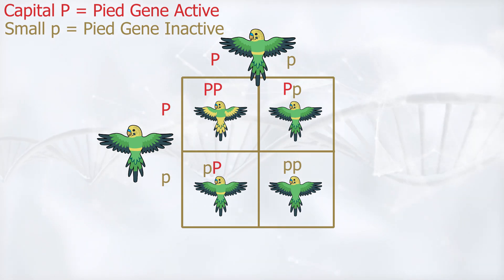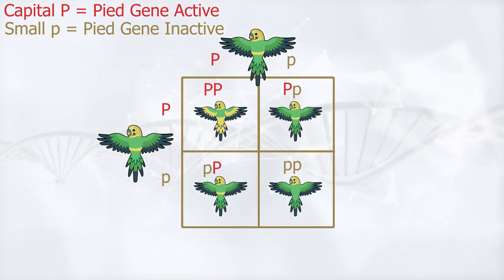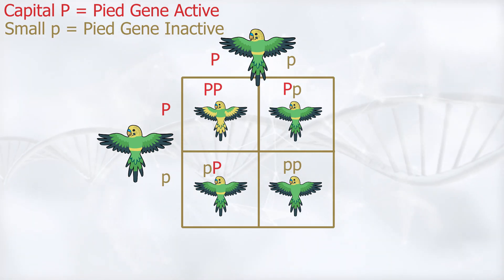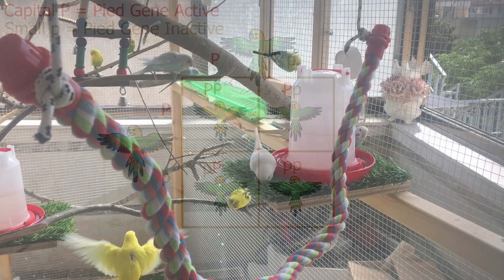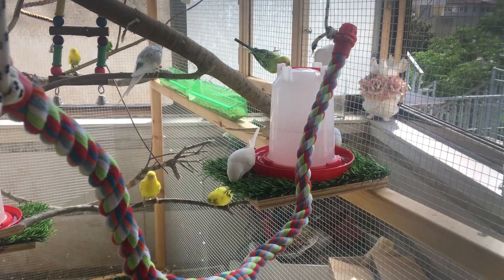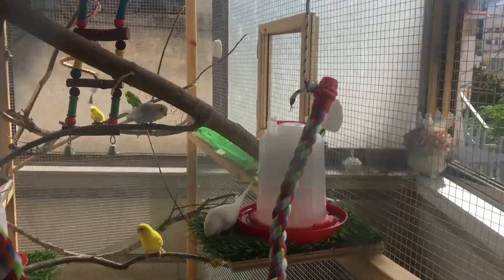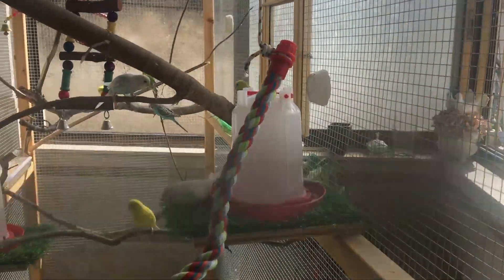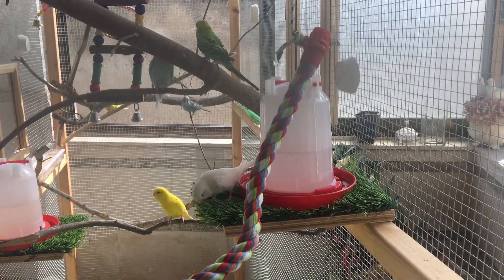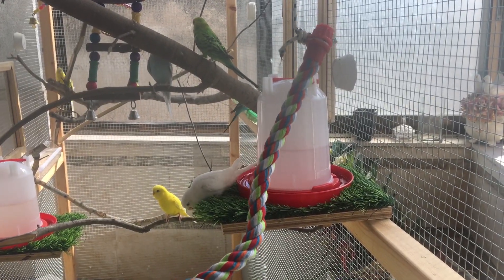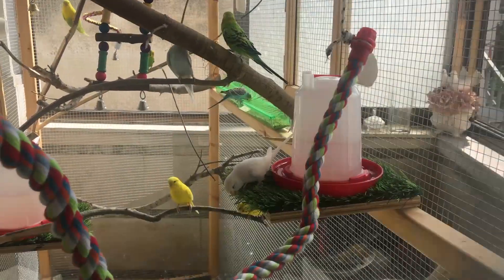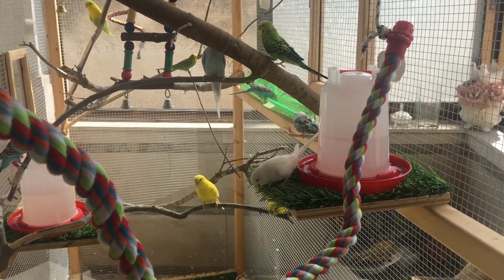And that's it — now you are a pro, and you can look at any budgie and immediately know if it is a single factor dominant Pied, double factor dominant Pied, or if it doesn't have the gene at all. Thanks for watching, and see you in the next episode.